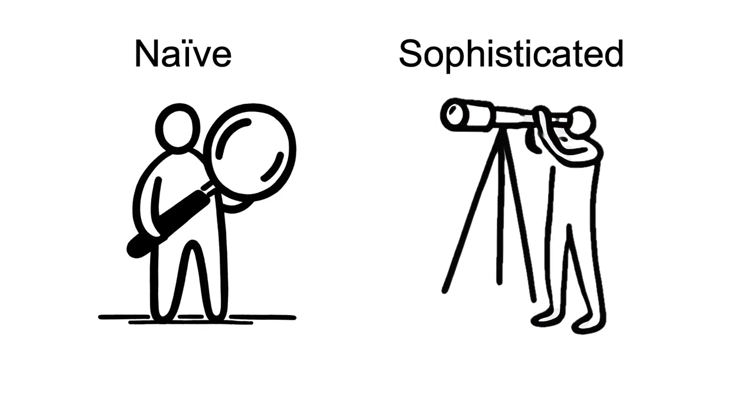The difference between naive and sophisticated present biased agents is best illustrated through examples. I provide several examples in the next video in this series.